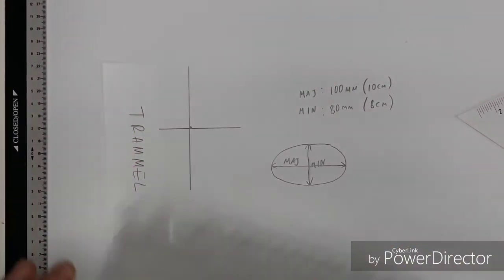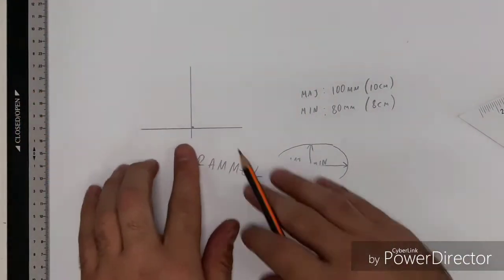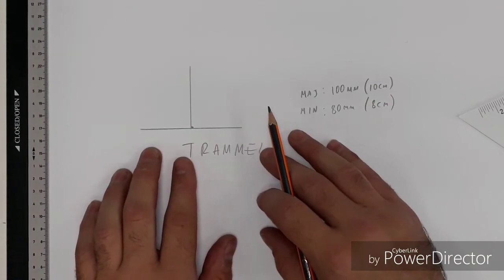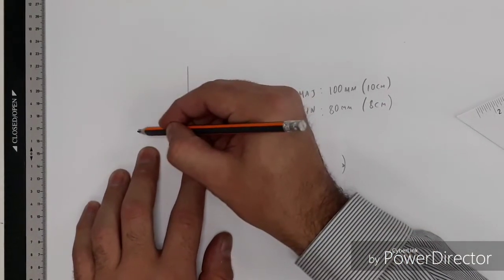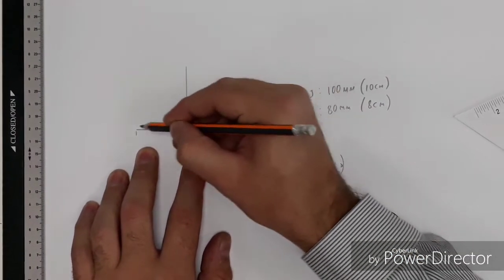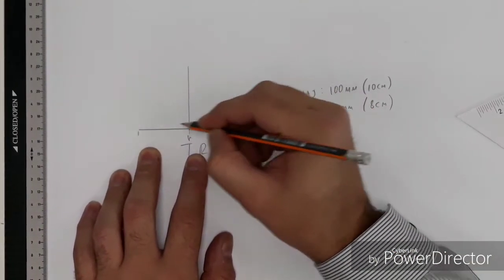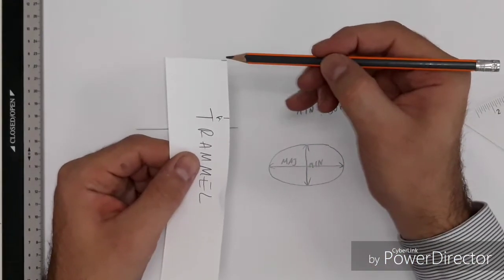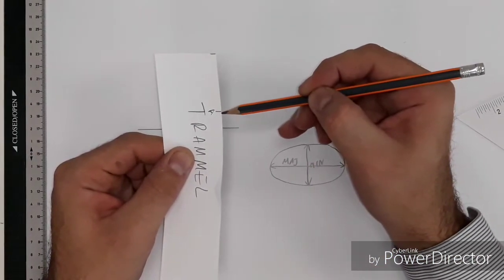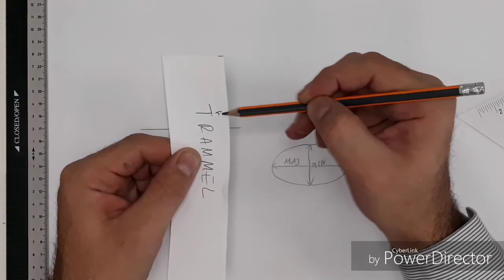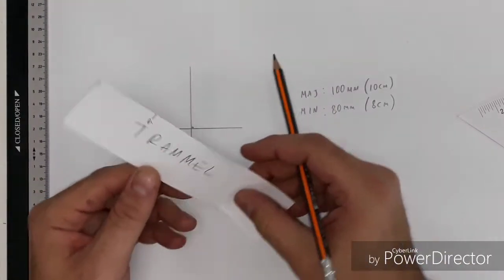The first thing we do with the trammel is we mark the minor axis. So from the edge of the trammel, we mark half of the minor axis and we label that as point A. You'll notice I've put a little mark at the end and a smaller mark here where we have the distance of half the minor axis.